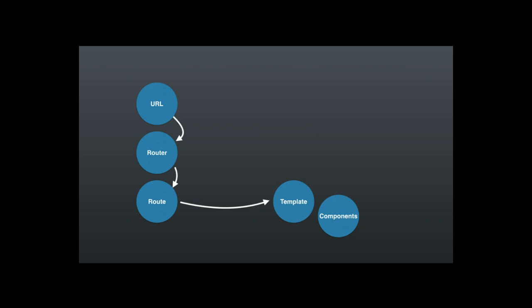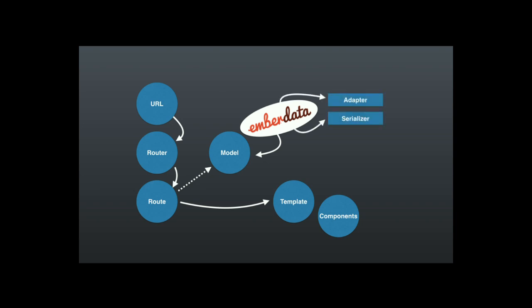At some point you need to persist your data, so as you click around your single-page app, you're going to want that stuff to stay around. You don't want to keep querying your API more than once. So Ember has this idea of a model, and that model drives your data and it persists using a library called Ember Data. Ember Data ships with two things: an adapter and a serializer, and these are actually how your Ember application talks to your back end. So for us, we had an adapter that talked with Drupal, and a serializer for translating data coming back from Drupal into something Ember can actually use.